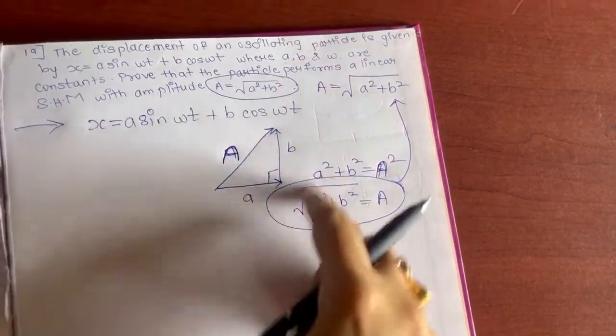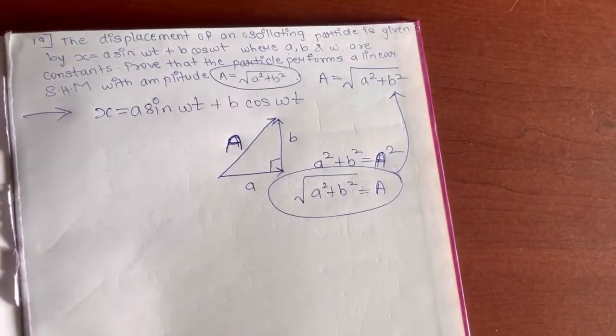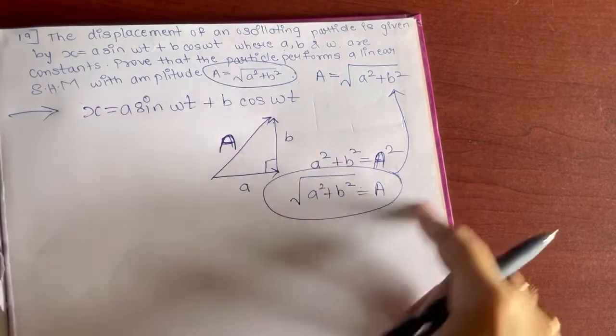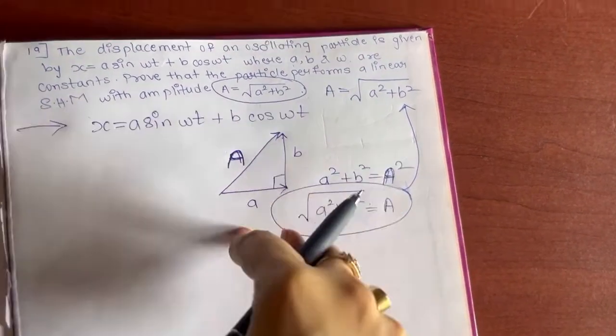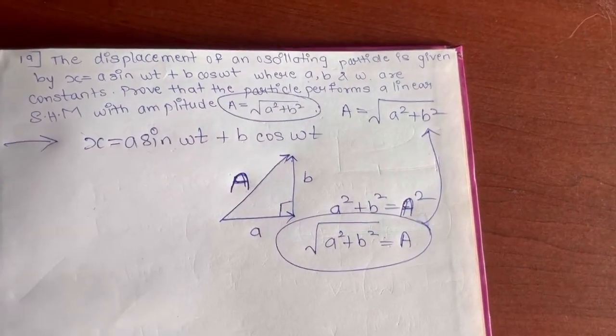So here I have just drawn the triangle with the help of the equation given in the question, and I have checked it afterwards, whether my substitution is right or wrong. Substitution of the value of sides and hypotenuse is right or wrong.